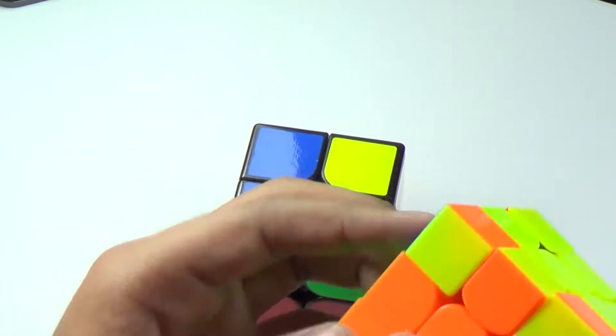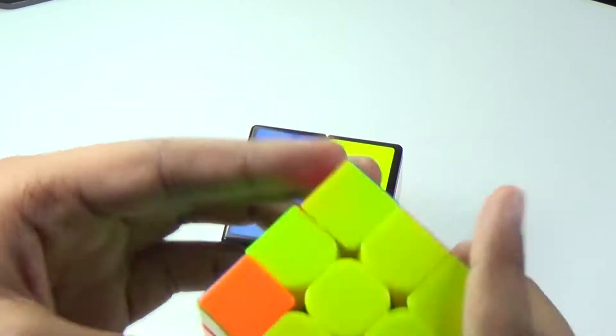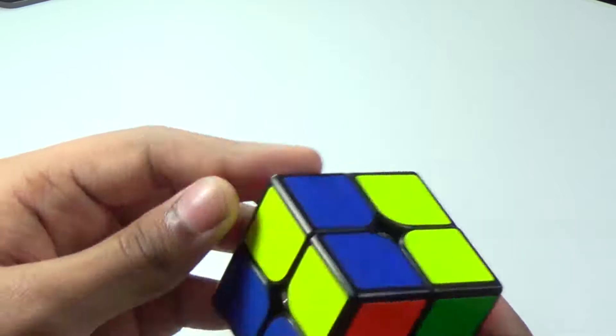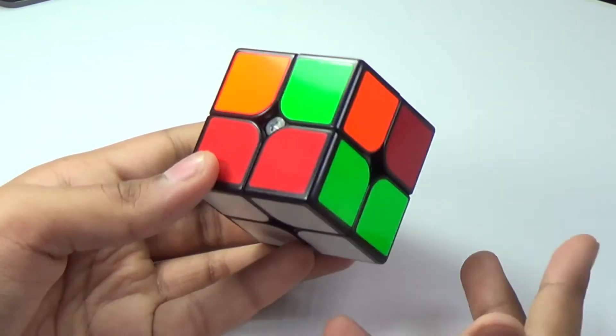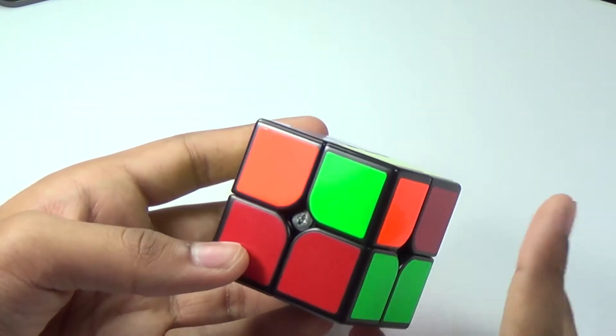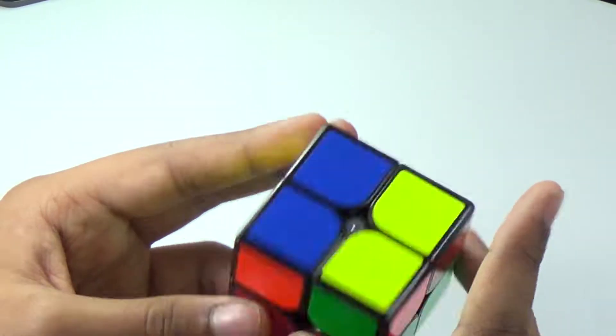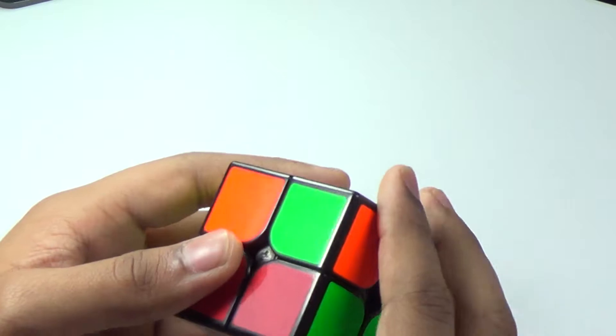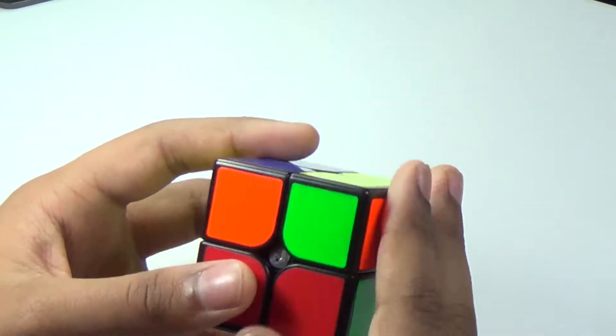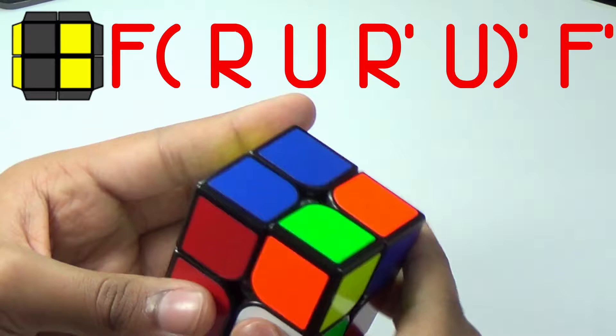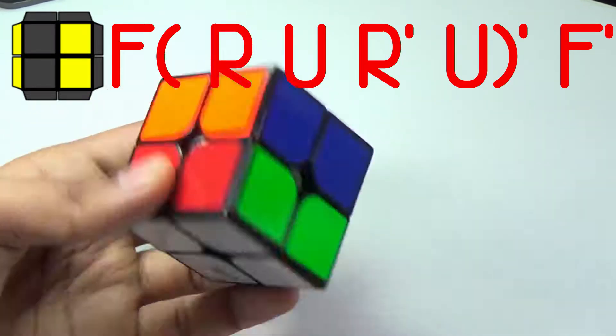Next up, we've got this one on the 3x3. This is how it looks on the 3x3, but on the 2x2, it looks something like this. Pretty easy to recognize as well. There's no algorithm where 2x2 is actually not easy to recognize, but yeah, pretty easy to recognize, and it's pretty easy to execute as well. With that being said, this is the algorithm.